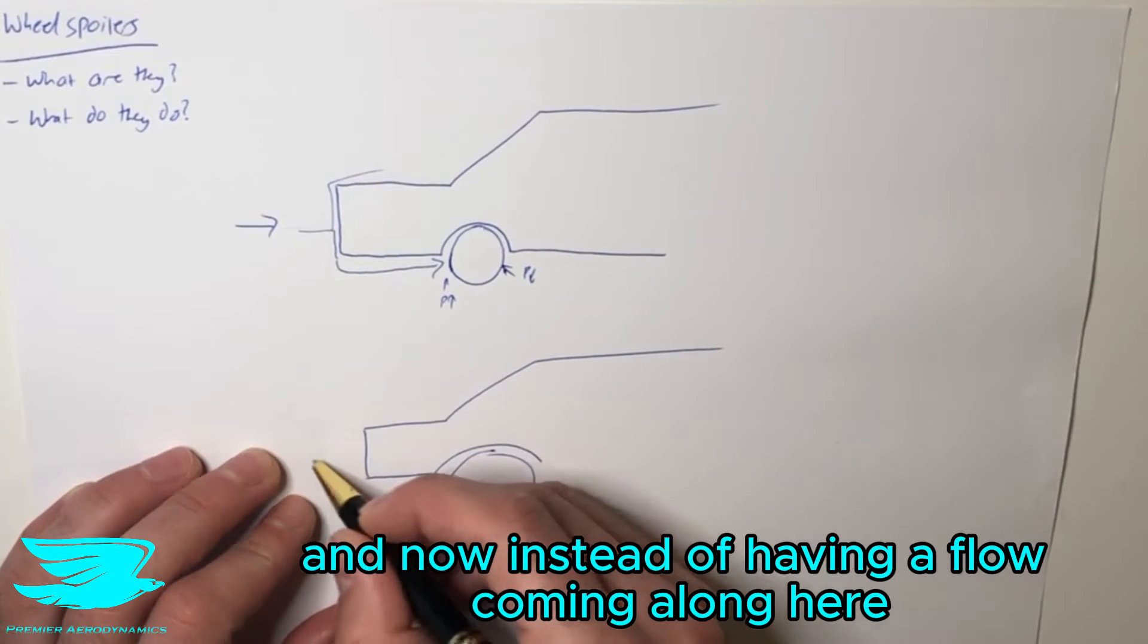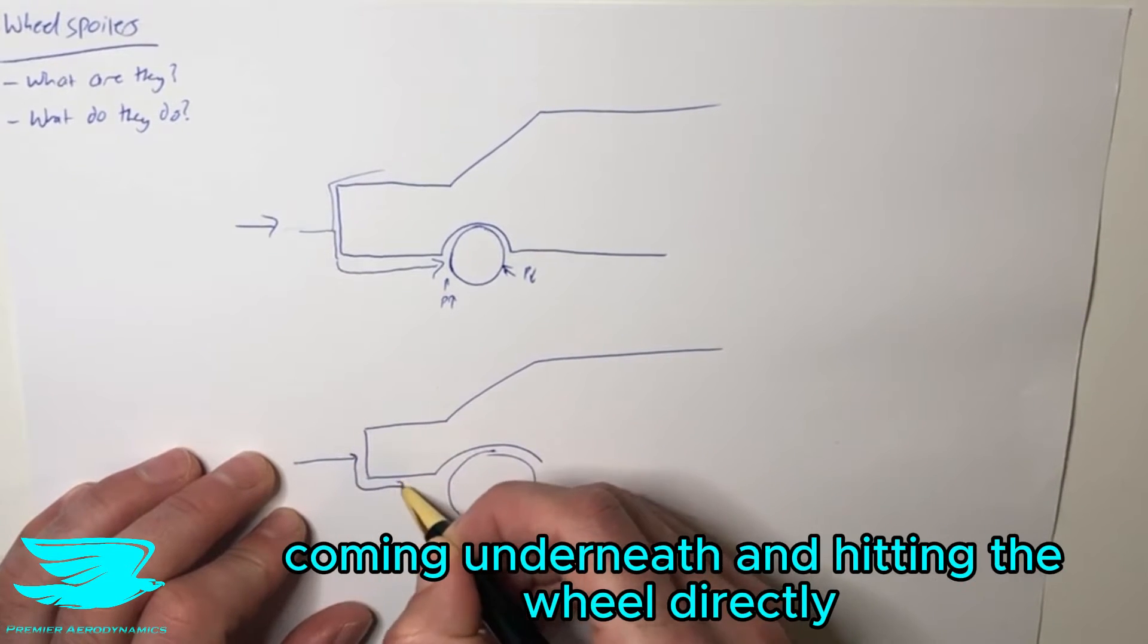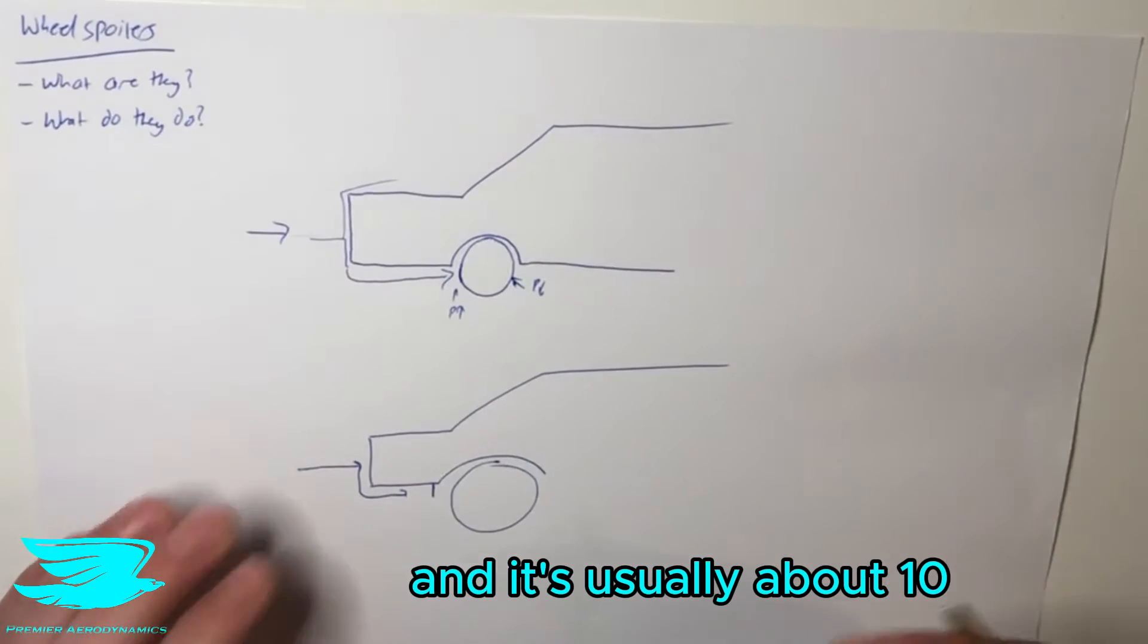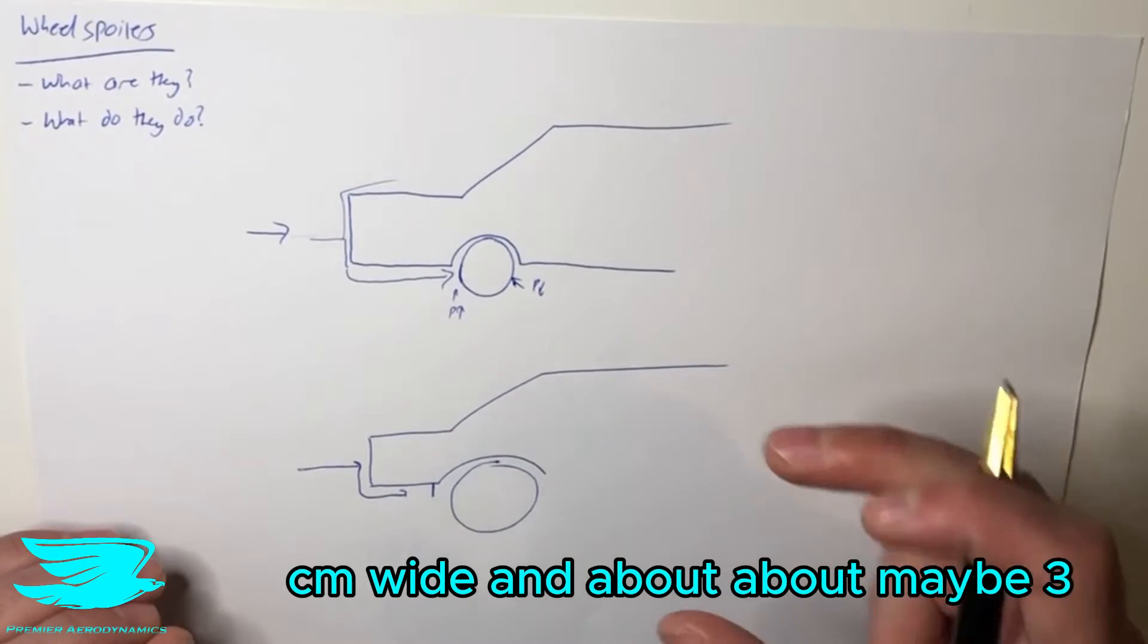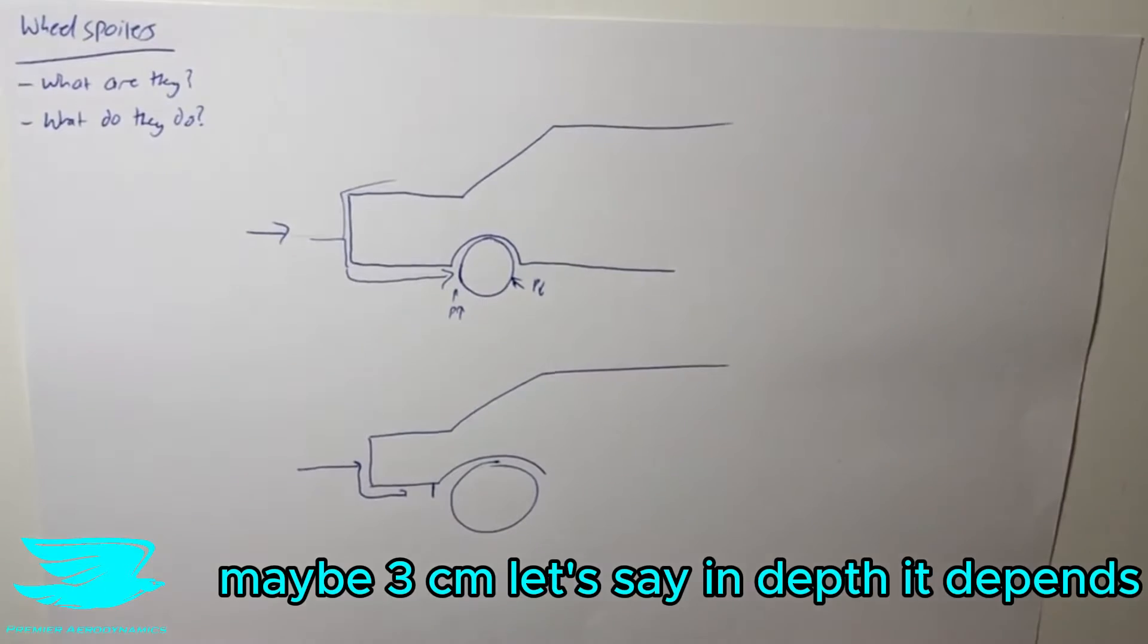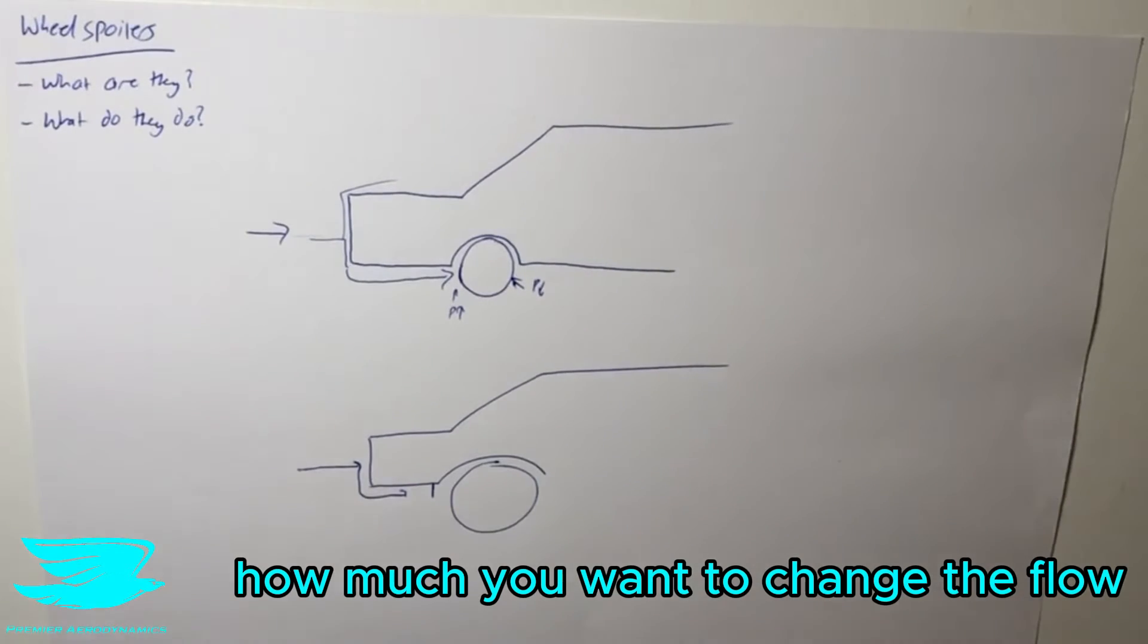Now, instead of having the flow come along here, coming underneath and hitting the wheel directly, we put this little flat plate here. It's usually about 10 centimeters wide and about three centimeters in depth. It depends how much you want to change the flow.